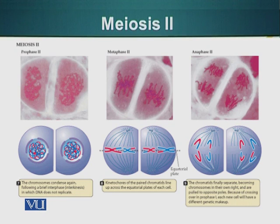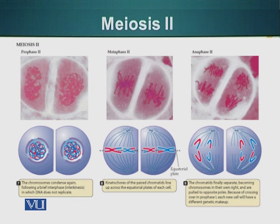At this stage, meiosis II is sort of similar to mitosis with two differences. Number one, there is no DNA replication prior to the cell division or meiosis II. Number two, the sister chromatids in mitosis are identical, but in meiosis II, the sister chromatids are not identical.